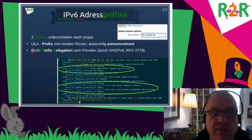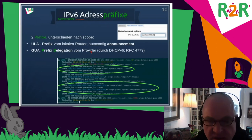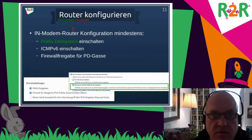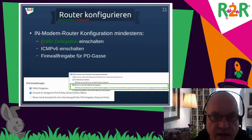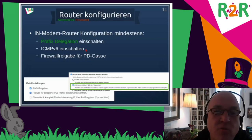Now we come to the GUA prefix, which comes from the prefix delegation. We don't set this ourselves — it comes from our Internet provider, distributed via the DHCPv6 protocol from RFC 4779. The provider sends us a prefix. What we have to do is tell our router — for example, a Fritzbox in Germany — to enable prefix delegation. ICMPv6 needs to be enabled; for V6 you should always enable this because otherwise the protocol won't even work properly. Because that sometimes doesn't work with older Internet setups, it sometimes has to be explicitly enabled on some devices — this is called Ping6.